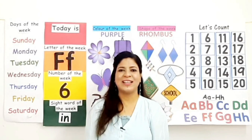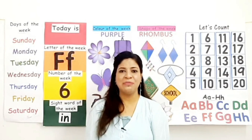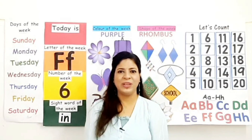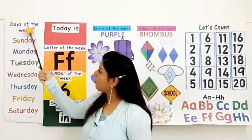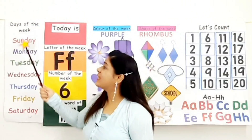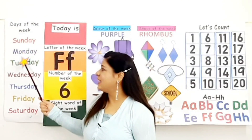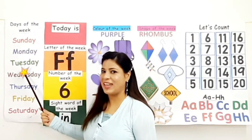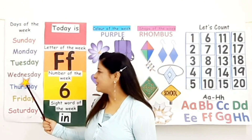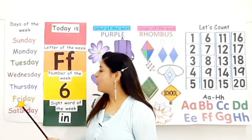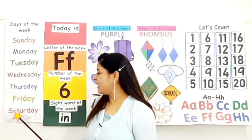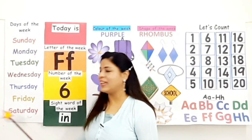Let's begin with circle time. It's time for the days of the week. Days of the week: Sunday, Monday, Tuesday, Wednesday, Thursday, Friday, Saturday.